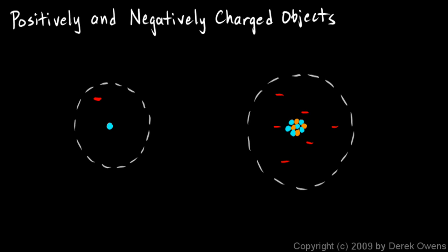An object that has an equal number of positive and negative charges is said to be electrically neutral or uncharged. A hydrogen atom, for example, consists of a single proton in the nucleus and a single electron.